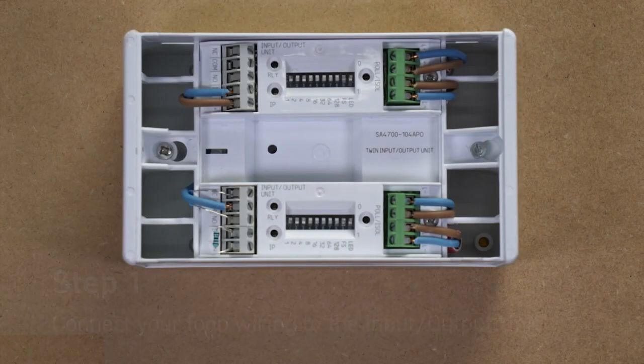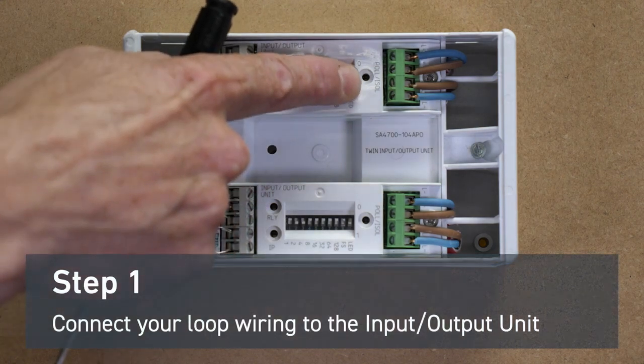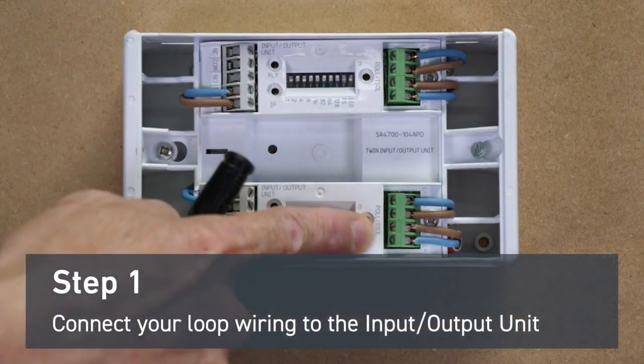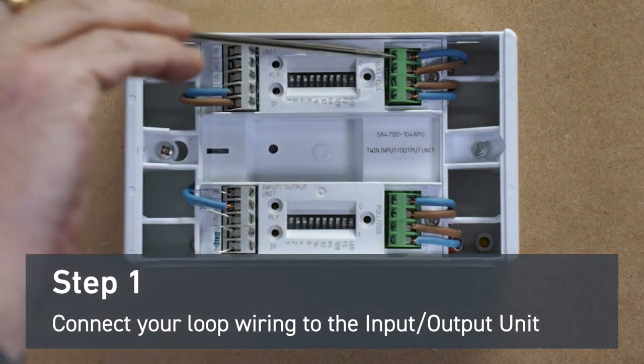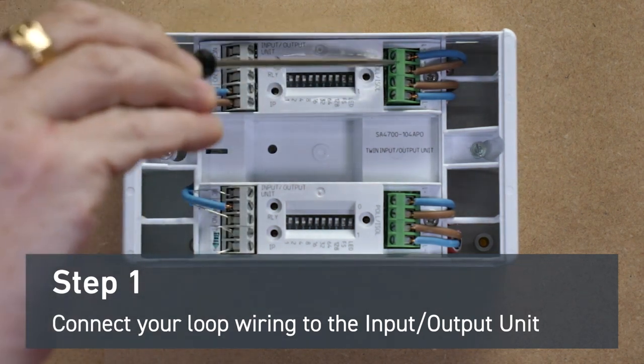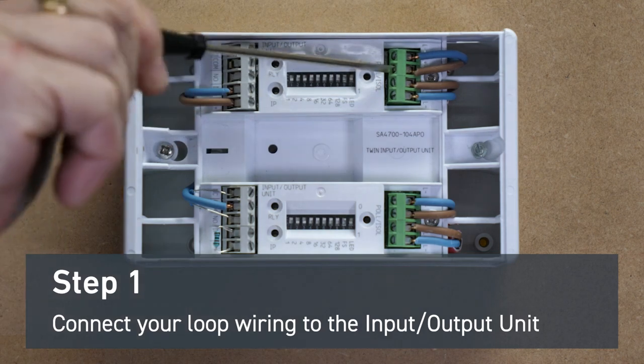First step is to connect your loop wiring to the input-output unit. Connect your two negative wires to the outer terminals and your two positive wires to the inner terminals.